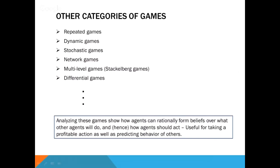There exist other categories of games, like repeated games, dynamic games, stochastic games, network games, stackelberg games, and differential games. The static matrix games for two players are only the simplest case. When modeling real problems, one may need dynamic, repeated, or multi-level games. Analyzing these games shows how agents can rationally form beliefs over what other agents do, and hence how agents should act — useful for taking profitable actions as well as predicting the behavior of others.